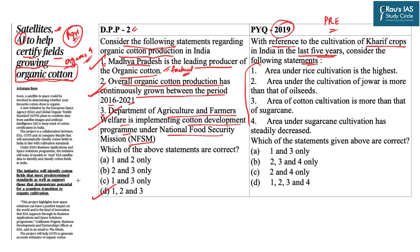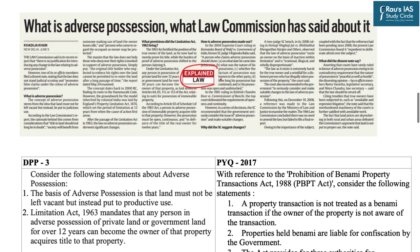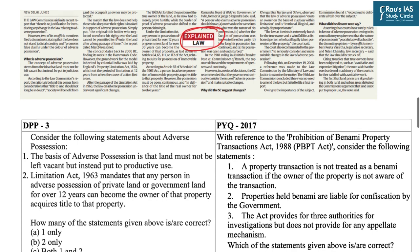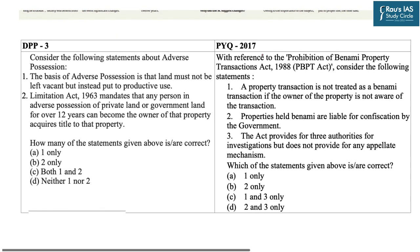The answer to the previous question is option A, one and three only. The next topic is from the Indian Express explained section: 'What is Adverse Possession and What Does the Law Commission Recommend for It?' We have framed a question on adverse possession. Previous year questions show that important acts which are in the news have been asked — for example, in 2017 a question was asked on the Prohibition of Benami Property Transactions Act 1988.